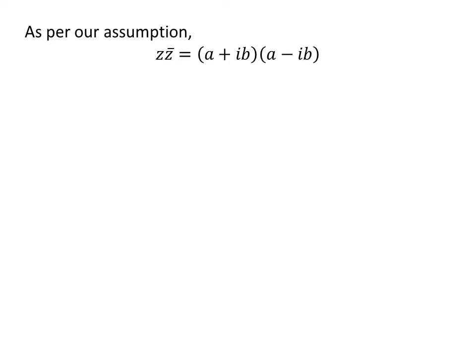So, z times the conjugate of z is equal to (a plus i times b) times (a minus i times b). Distributing the multiplication gives us z times the conjugate of z is equal to a times (a minus i times b) plus i times b times (a minus i times b).